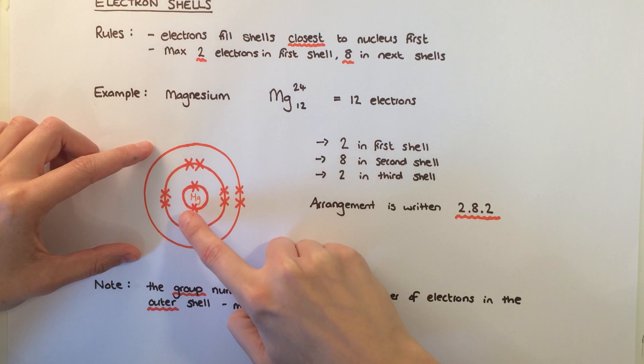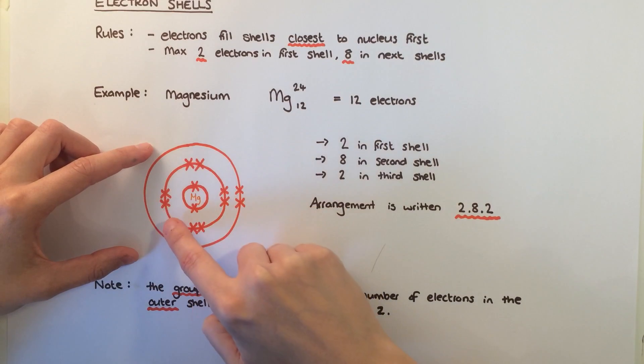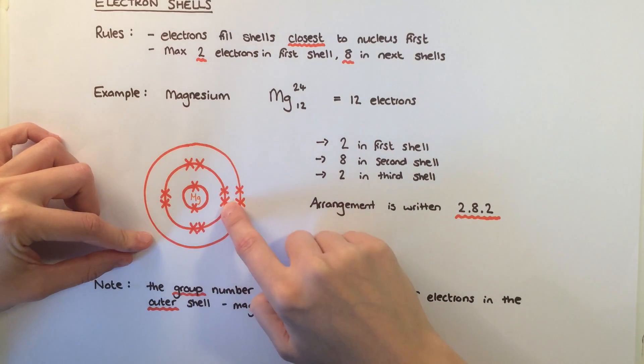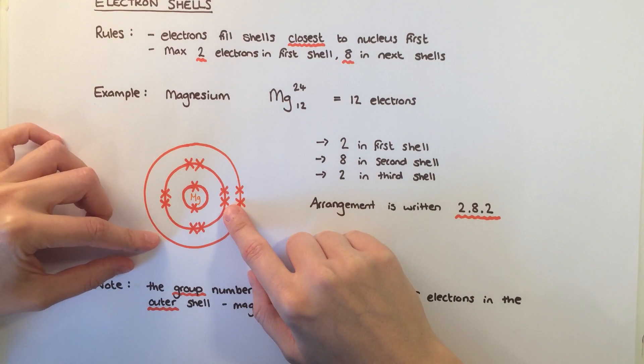We then draw the first shell and fill this with 2 electrons using either crosses or dots. The next shell can have up to 8, so that takes us to a total of 10, and then 2 more in the third shell gives us our 12 electrons.